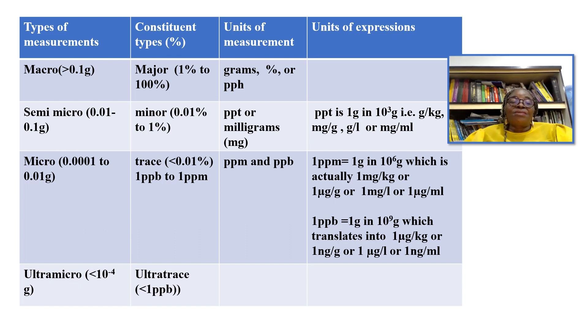Parts per million, where we are looking for micro substances, is 1 gram in 10 raised to power 6 grams, which is actually 1 milligram per kilogram or 1 microgram per gram or 1 milligram per liter or 1 microgram per milliliter.